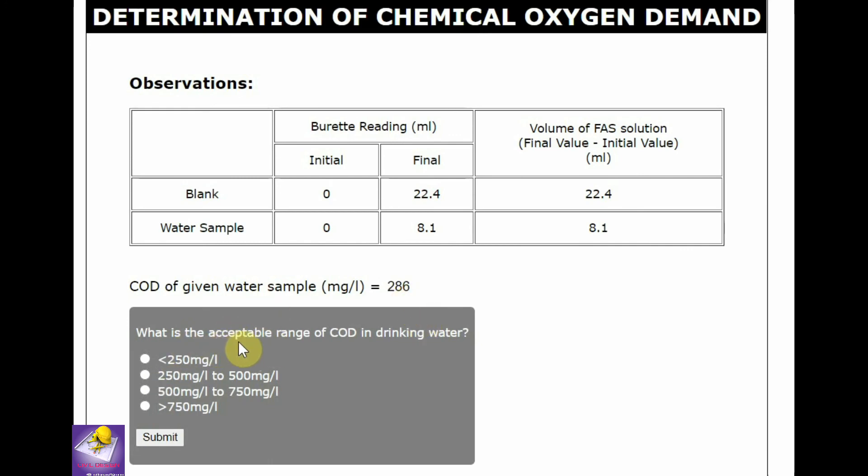What is the acceptable range of COD in drinking water? Less than 250 mg per liter as recommended by Bureau of Indian Standard.